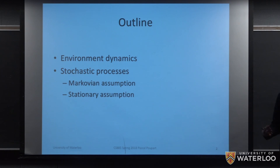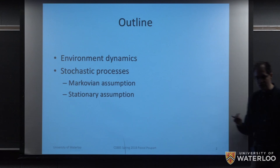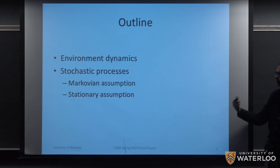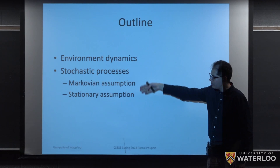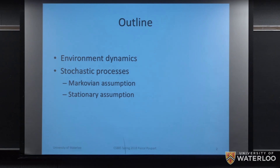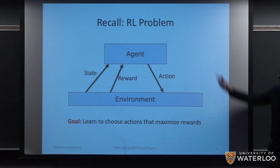Markov processes are important in order to model environment dynamics. The idea is that we've got a reinforcement learning agent that's going to select actions as part of the environment, but this environment is evolving. So it will have some dynamics, and we're going to need to model this. For this we're going to use stochastic processes, and we're going to make two important assumptions: the Markovian assumption and the stationary assumption.